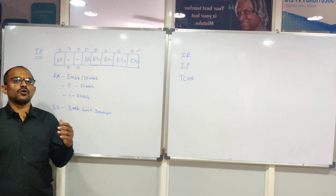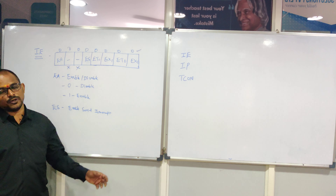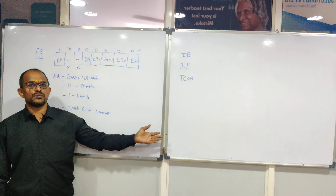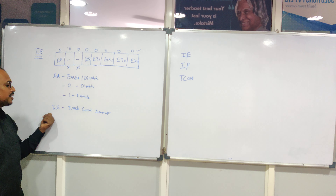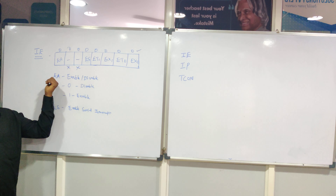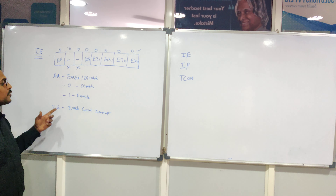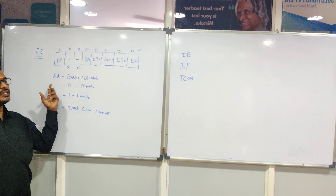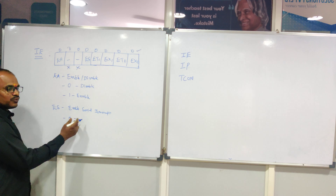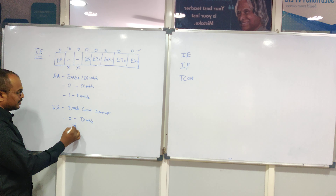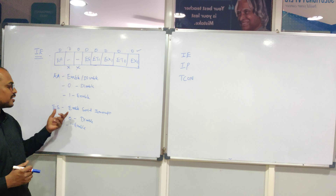You also have individual control over interrupts. Out of 6 interrupts, 5 are programmable: INT0, INT1, Timer 0, Timer 1, and serial. The ES bit is used to enable or disable the serial interrupt individually. Even if EA is enabled, if ES bit logic is 0, the serial interrupt is disabled. To use any interrupt, EA must be 1 and the individual bit must also be 1.